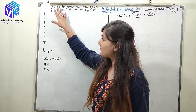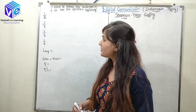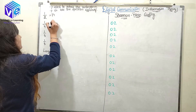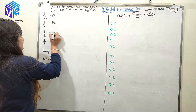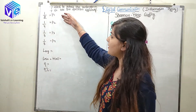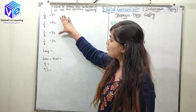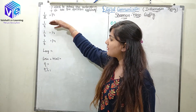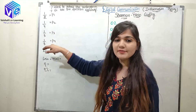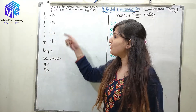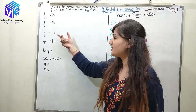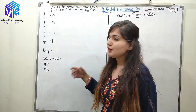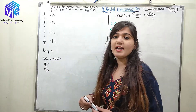Let's take this example. I have four digital messages with probabilities P1, P2, P3, P4. The probabilities are 1/2, 1/4, 1/8, and 1/8. The first step is to arrange them in decreasing order of probabilities — these are already arranged in decreasing order, so I will not disturb it.